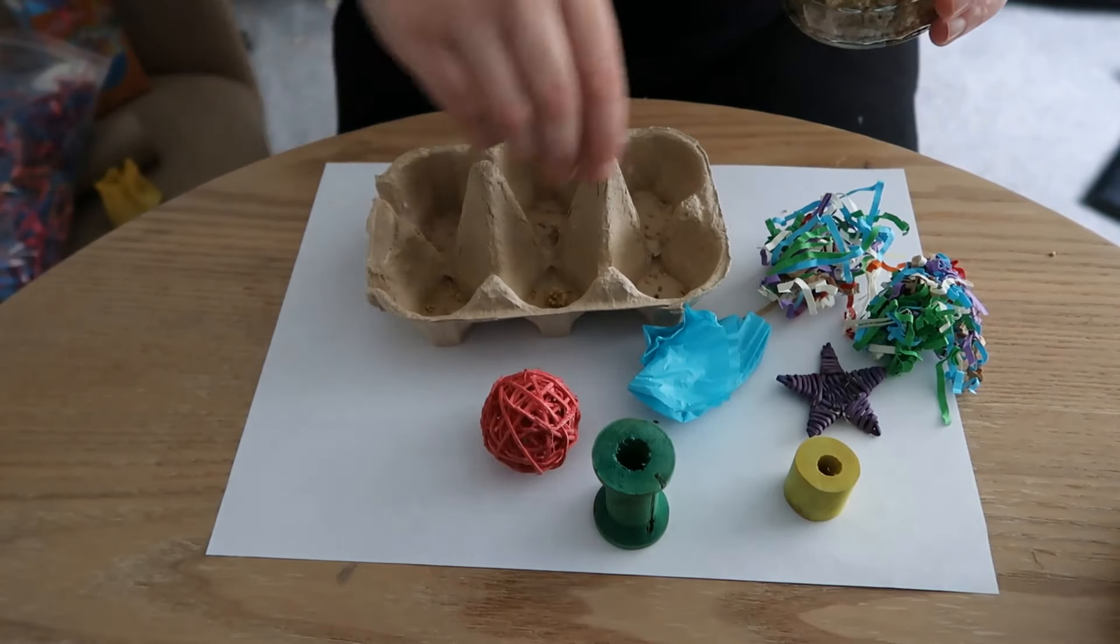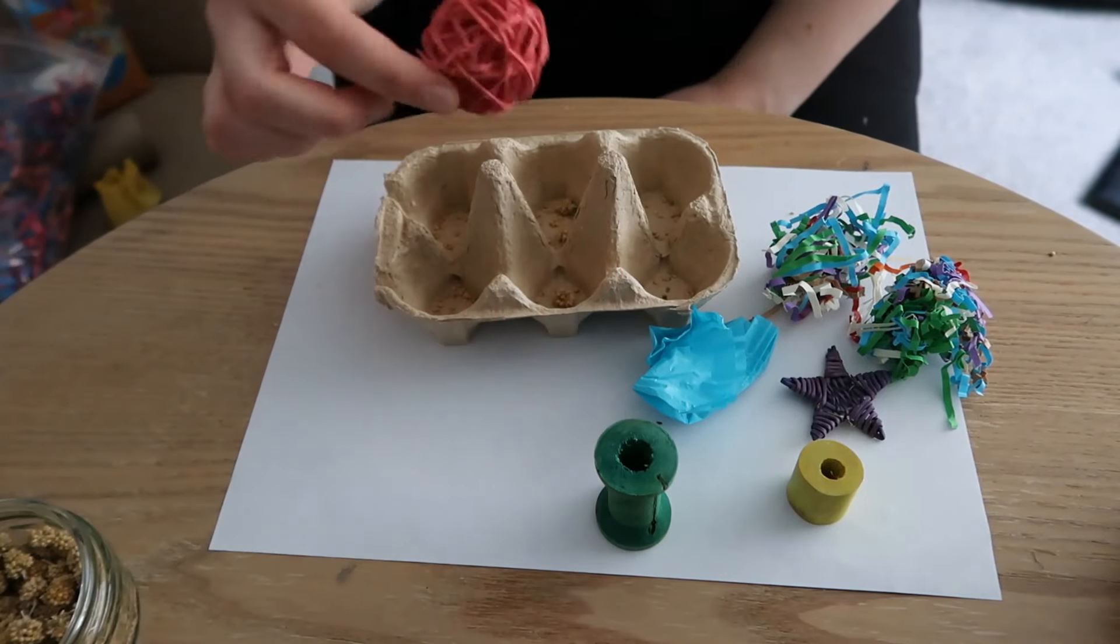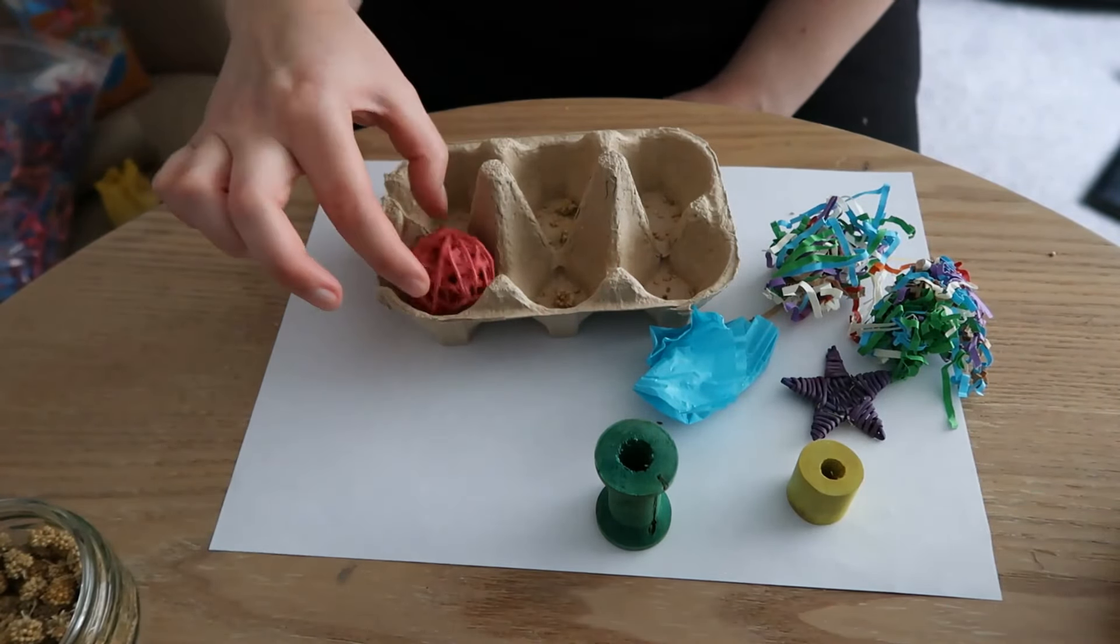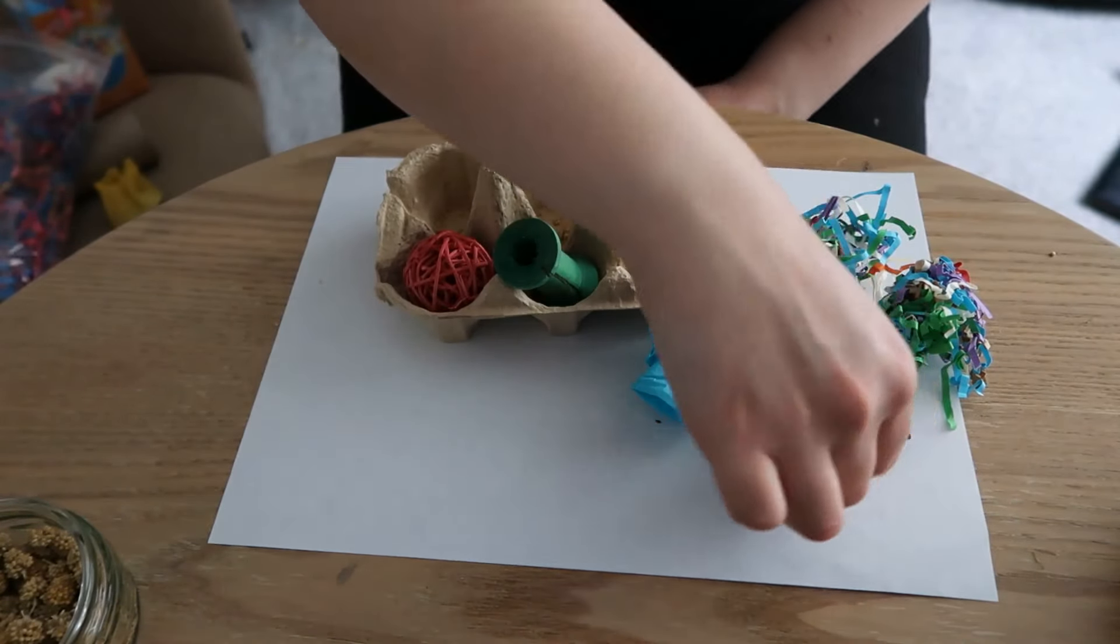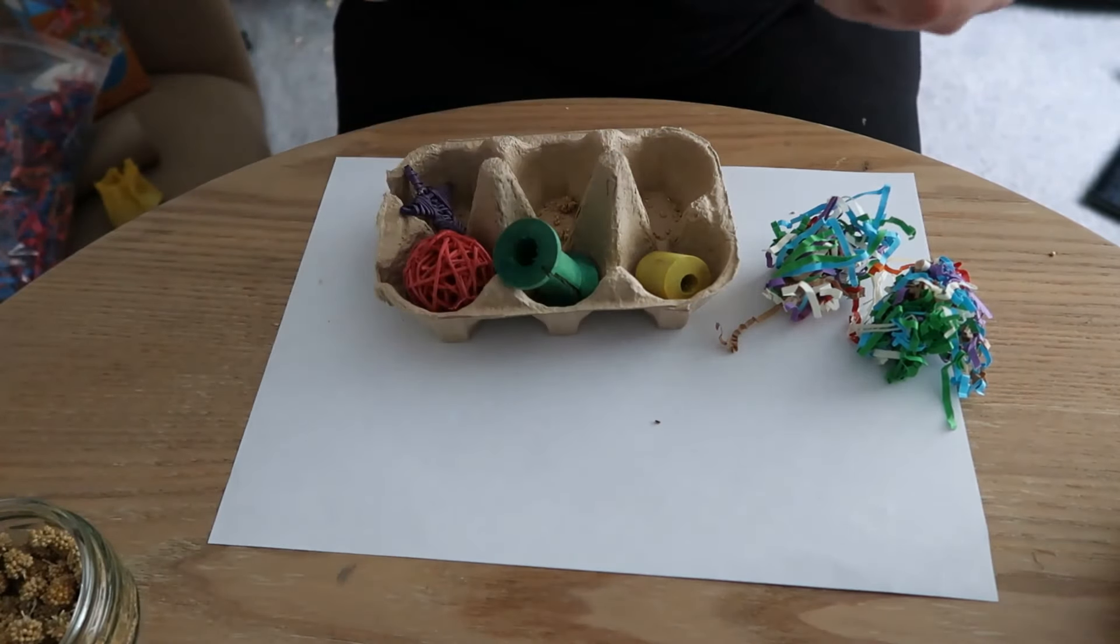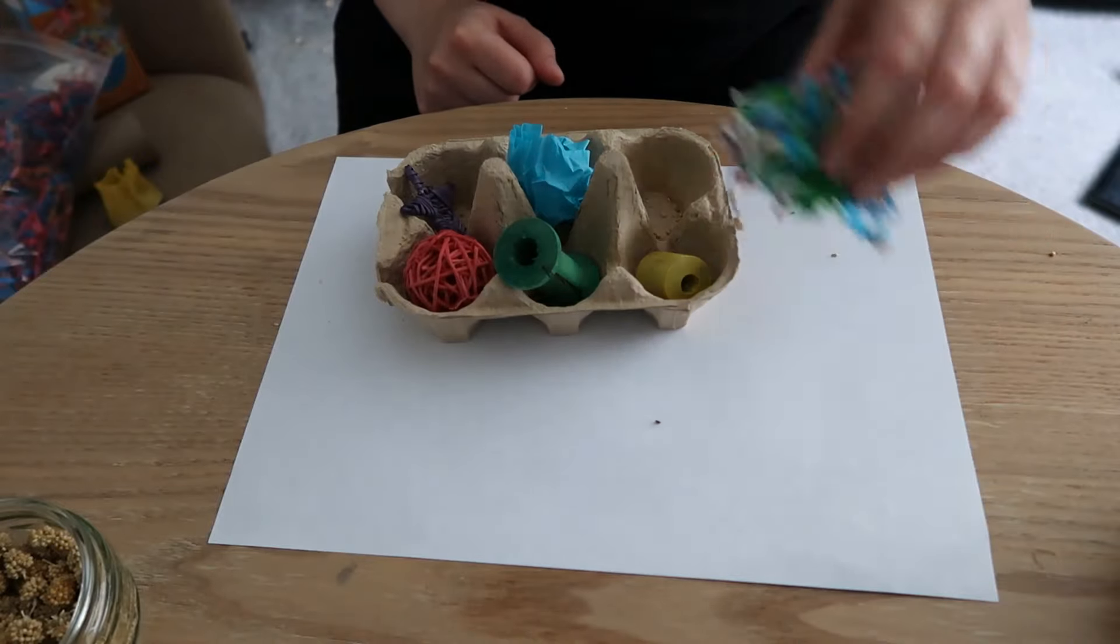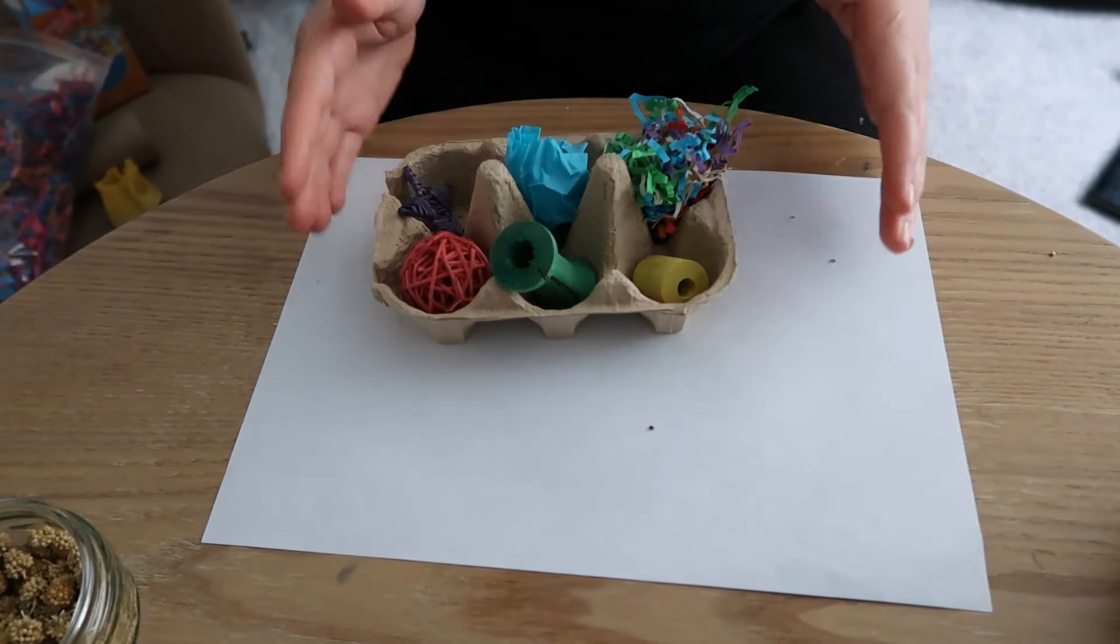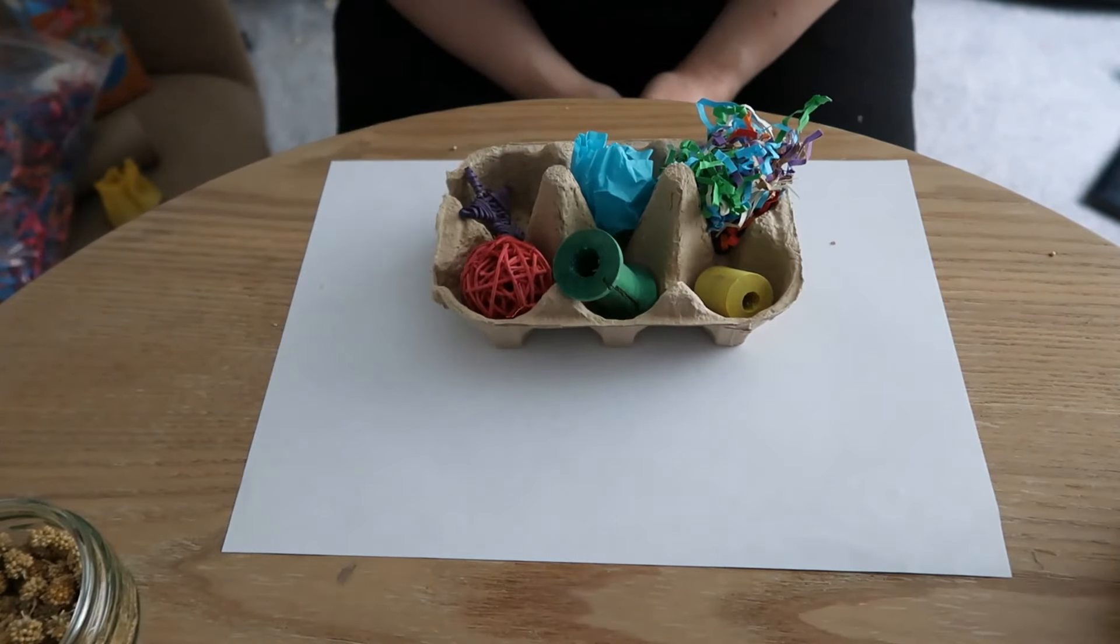And then all you need to do is grab all of these bits and bobs and all of your previous bird toys and just pop them into each part of the carton. And this means that your toys have a new lease of life. Even the cake cases that you used in the previous DIY can go in there too, and then you've got a lovely bird toy. So this is another way of promoting mental stimulation and foraging behaviors for your bird.